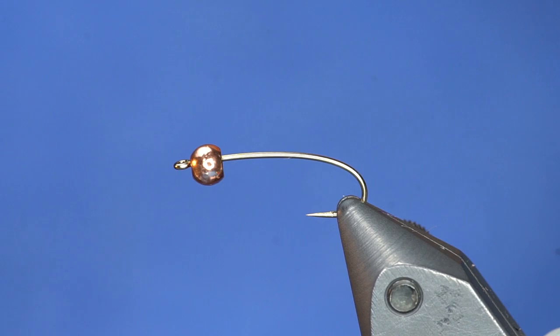This is a hook. And this is a bead. And you can fish it just like this. No, just kidding. We're going to tie a 20-incher. It's a classic fly that's been around for billions of years. Maybe trillions.